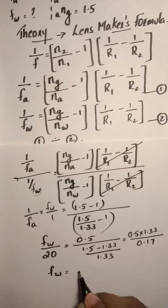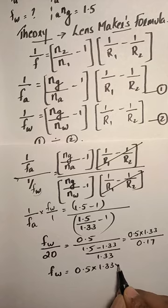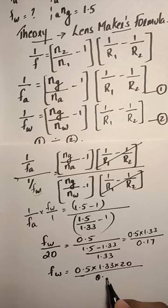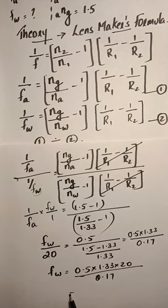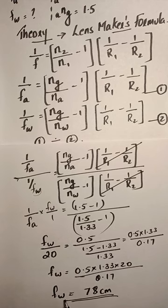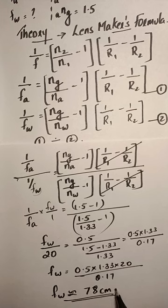F_W equals 0.5 multiplied by 1.33 multiplied by 20, all divided by 0.17. The answer is approximately 78 centimeters. So the focal length of the given lens in water is 78 centimeters, rounded to the nearest whole number.